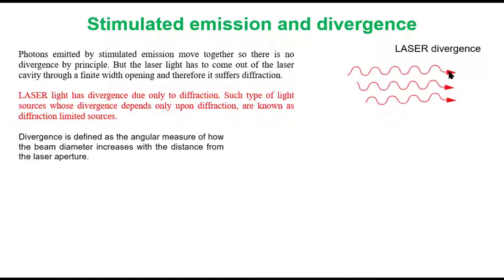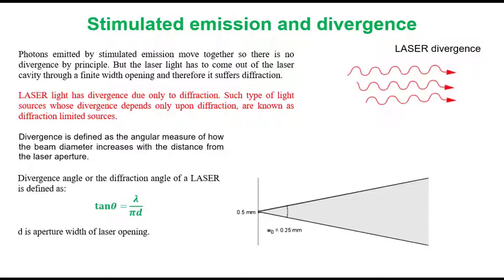Divergence is defined as the angular measure of how the beam diameter increases with the distance from the laser aperture. Simply, divergence is defined as the angle at which the beam expands. The divergence angle or diffraction angle of a laser is defined as tan theta equal to lambda by pi d. Here theta is divergence angle, lambda is its wavelength and d is the aperture width. So the divergence of laser is directly proportional to its wavelength and it is inversely proportional to the laser opening. The smaller laser opening causes a greater divergence.